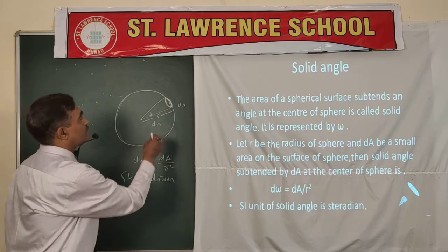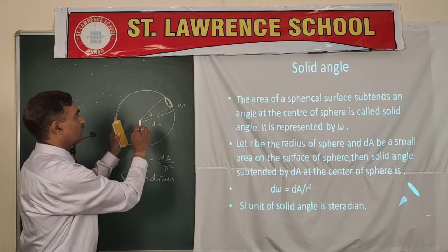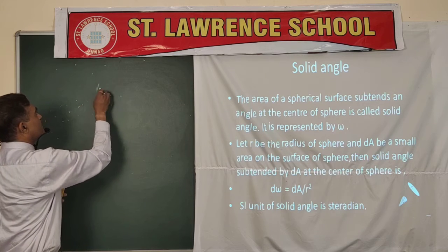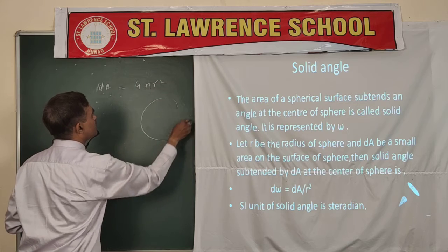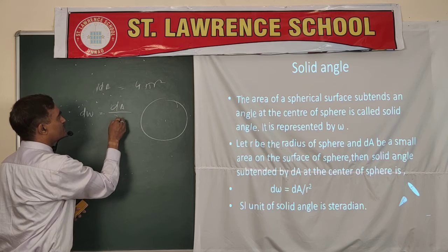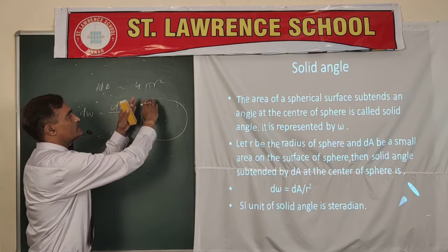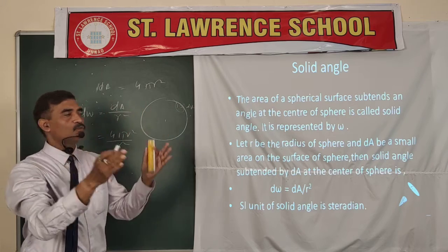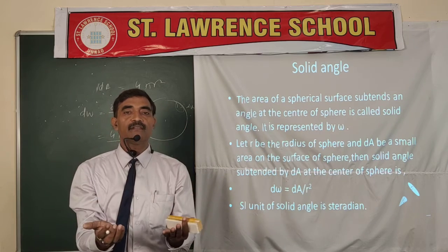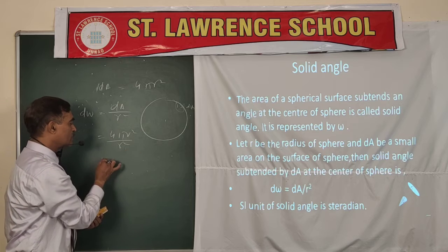If we expand this small surface throughout the closed spherical surface, then for the whole closed surface the surface area becomes 4πR². This is the surface area of the sphere. So if we calculate the solid angle subtended by the whole surface area, that will be 4πR² upon R², and R² cancels, giving 4π.